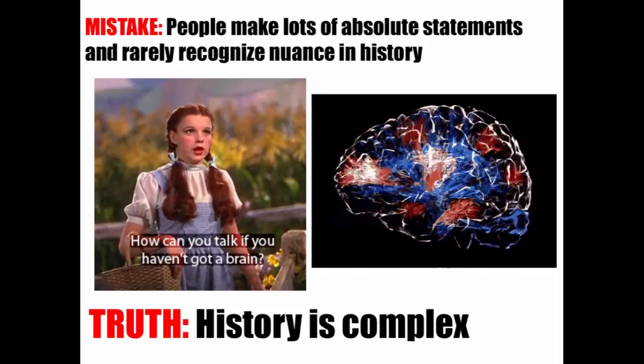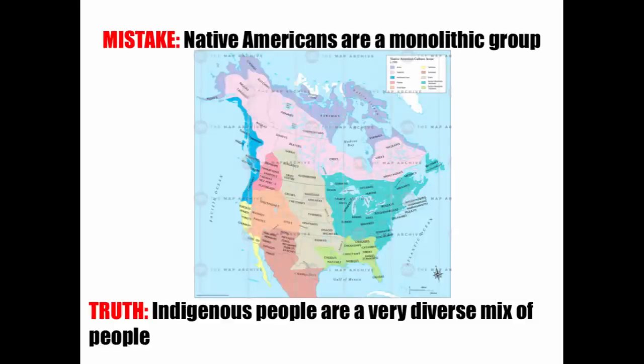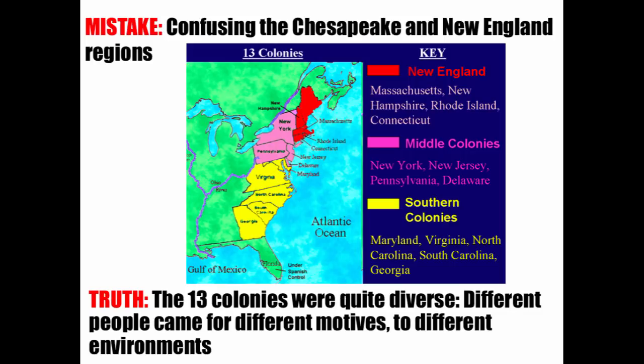Students like to say that Native Americans are a monolithic group. The truth is indigenous people are a very diverse mix of people. They adapted to a variety of environments, had different social structures, some formed alliances with European powers, many got screwed over — but there is no one Native American experience.